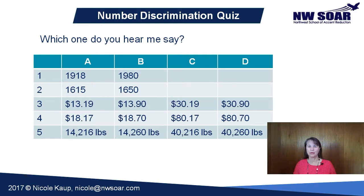Number four: $18.70 or $80.17? And number five: $14,216 pounds or $40,216 pounds?